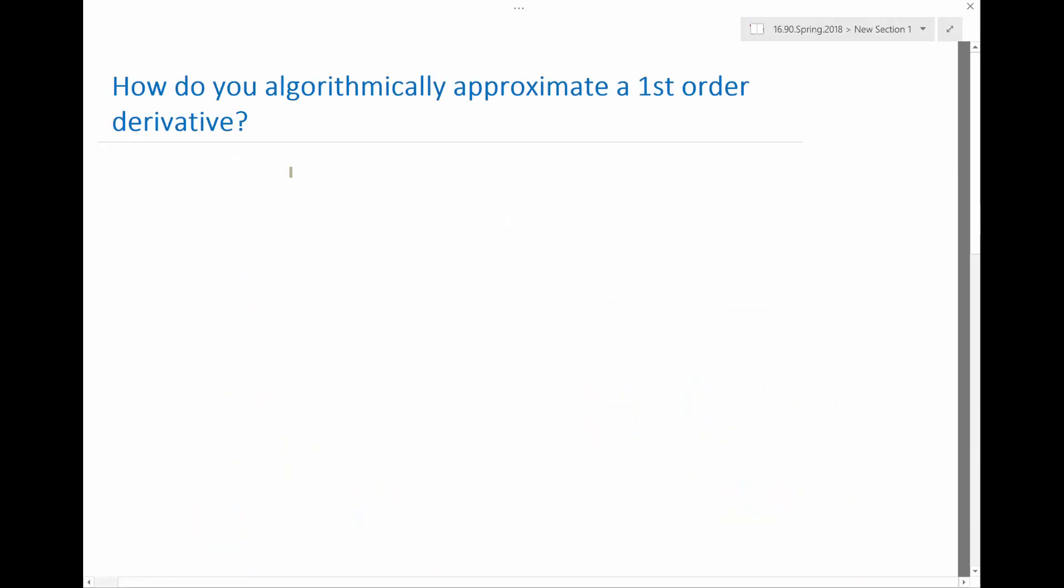How do you algorithmically design an algorithm to approximate a first order derivative if you don't know analytically what the function is? Assuming you can evaluate the function at any point, right?